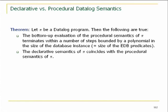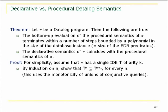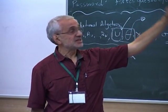Here is the key result. For a datalog program, the bottom-up evaluation terminates in a number of steps bounded by a polynomial in the size of the database instance, and the declarative semantics coincides with the procedural semantics. By induction, the nth iteration is contained in the (n+1)th iteration — this uses monotonicity of the building blocks. T_0 is empty, and we use monotonicity to get T_0 ⊆ T_1, and assume T_n ⊆ T_{n+1}.